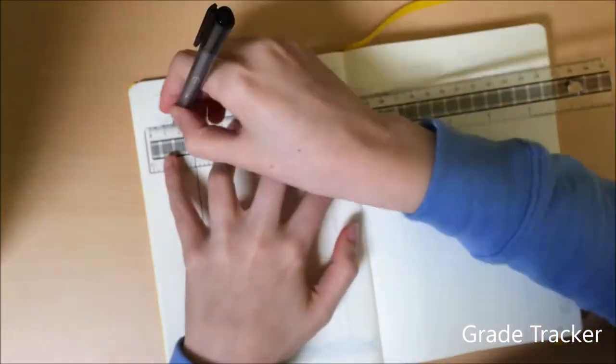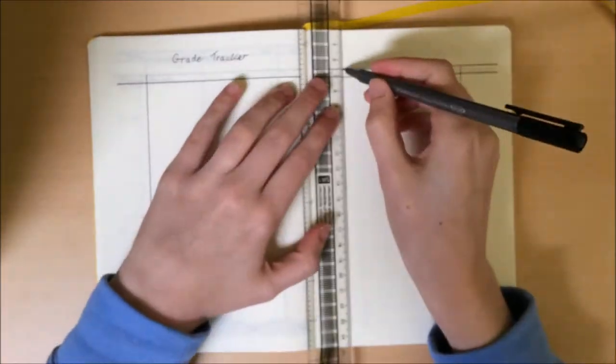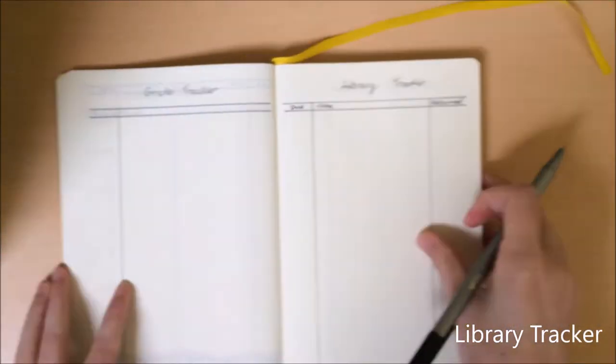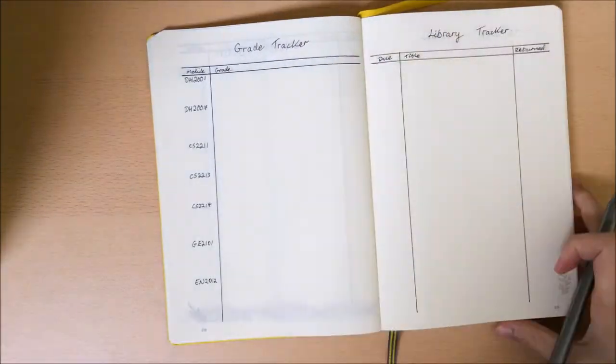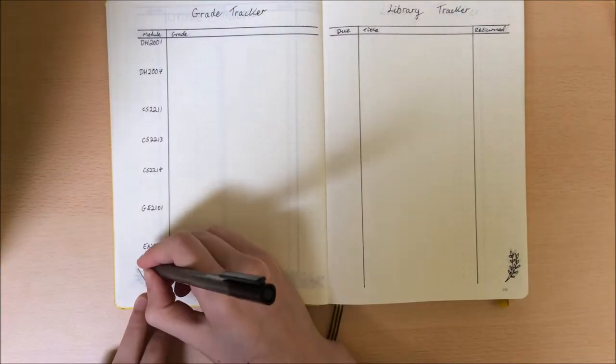Next is just a single page as a grade tracker to keep track of every single one of my results on one page, and also a library tracker to keep track of the books that I take from my college library, when they're returned and when they're due.